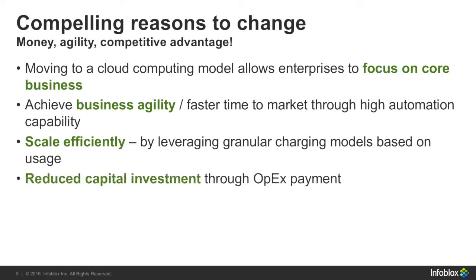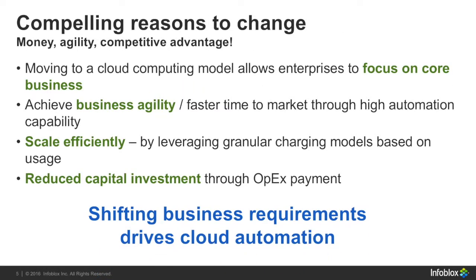There are good reasons to change. One such reason is because it allows them to focus on their core business. By moving into a highly virtualized workload environment, it provides them with the ability to achieve better business agility with a faster time to market. It allows them to scale efficiently by leveraging different granular charging models and using only what they consume. It also reduces their capital investment because now they're shifted to an OPEX payment system. The shifting business requirements in the market today is what drives cloud automation.